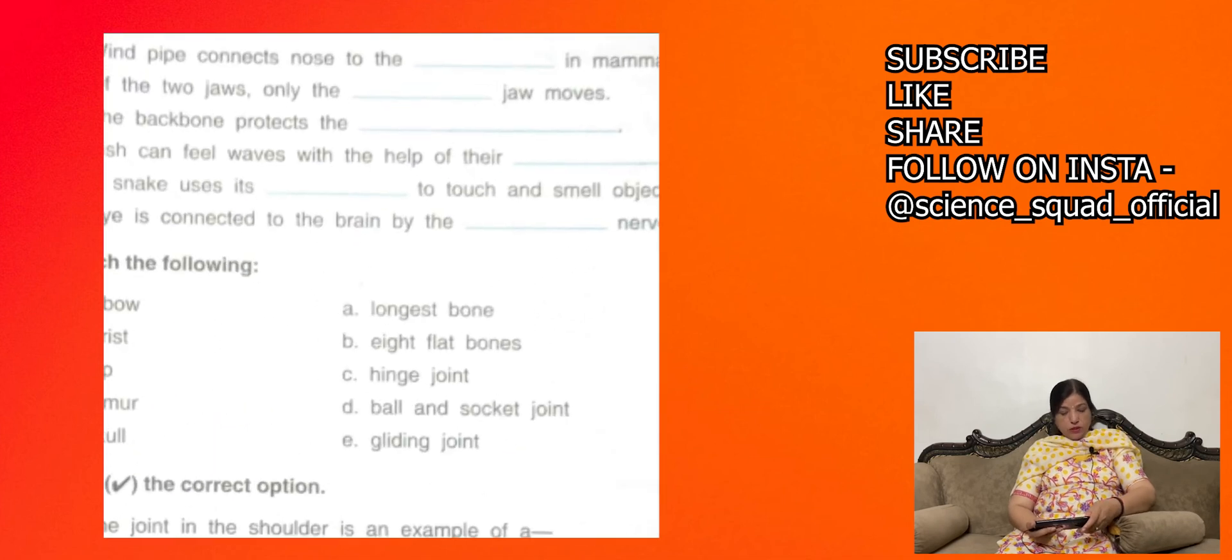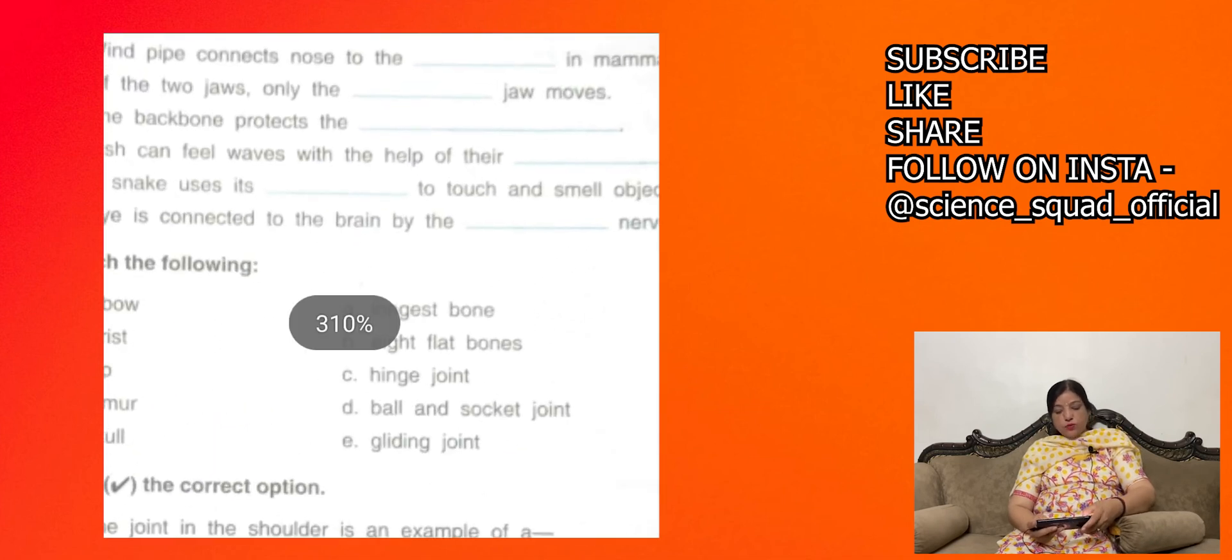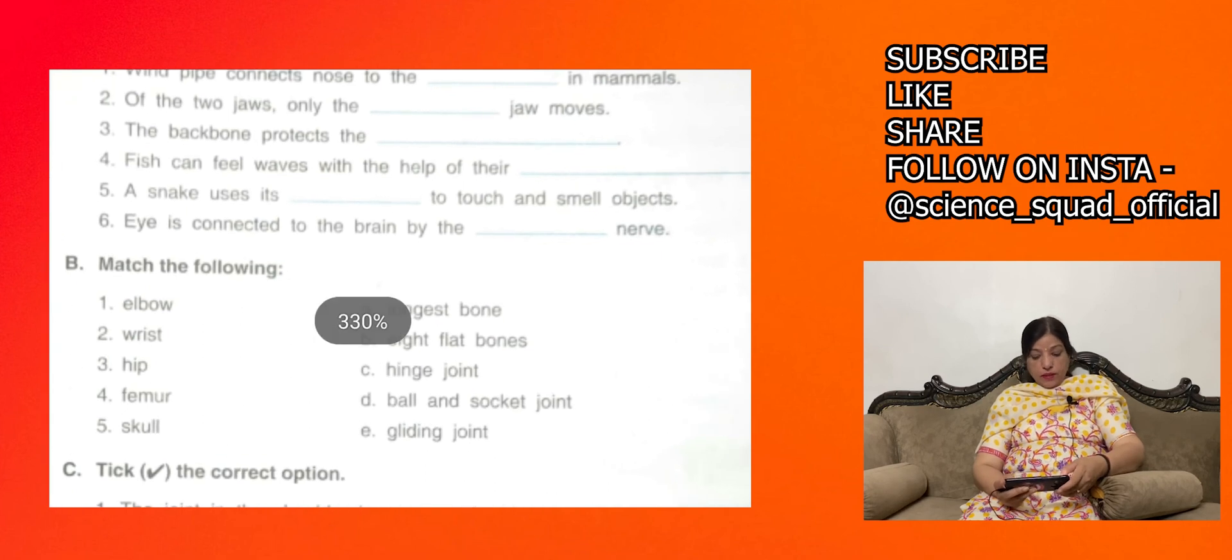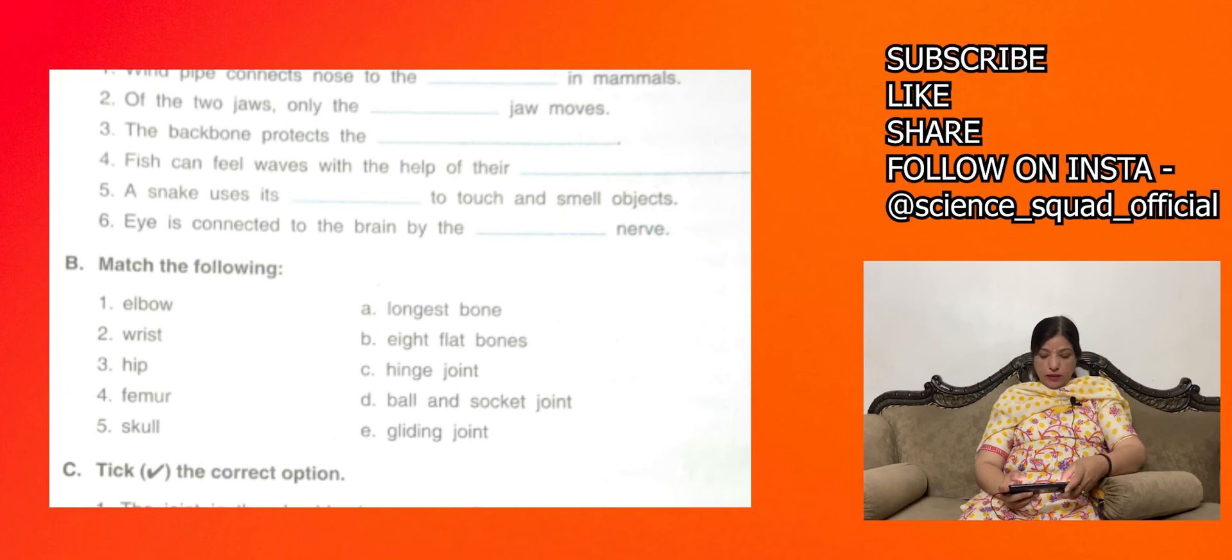Eye is connected to the brain by the optic nerve. Great, let's do match the following: elbow, elbow humaree mein koon sa joint hai? That is hinge joint. Wrist has gliding joint, hip has ball and socket joint.